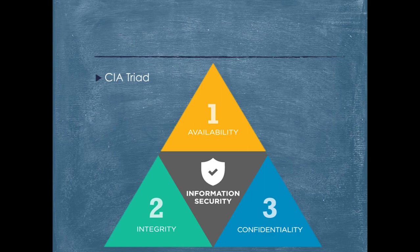Availability is best ensured by rigorously maintaining all hardware, performing hardware repairs immediately when needed, and maintaining a correctly functioning operating system environment that is free of software conflicts. It is very important to keep current with all necessary system upgrades, do patching, get the right bandwidth for your office, and prevent bottlenecks. Organizations implement RAID — a redundant array of inexpensive disks — to have redundancy of data available across multiple disks. You will also have high availability cluster setup, load balancer setup, take backups, and perform disaster recovery in worst-case scenarios with a comprehensive disaster recovery plan.